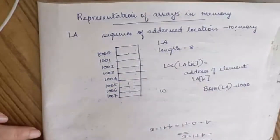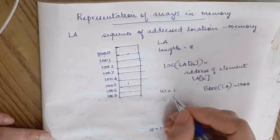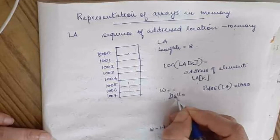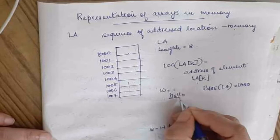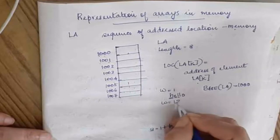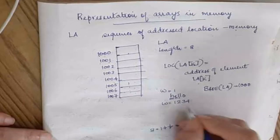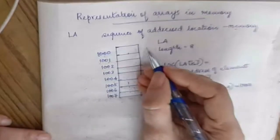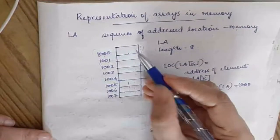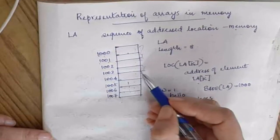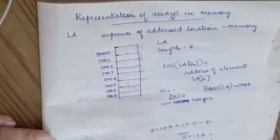To calculate the location, we need the word length W. Word length depends on the data type. For example, a character takes 1 byte, so word length W = 1. An integer takes 2 bytes, so word length W = 2. Depending on the data type, the word length will differ.